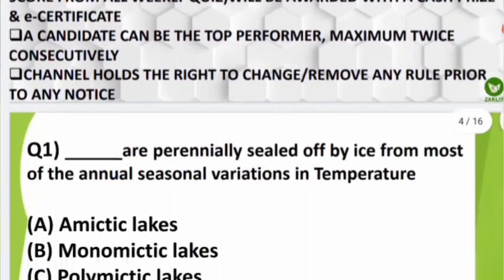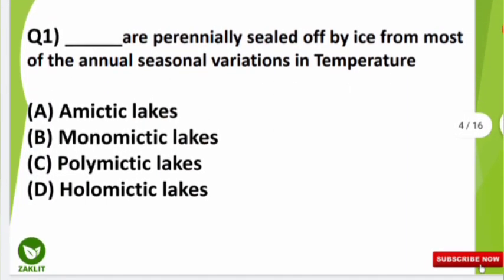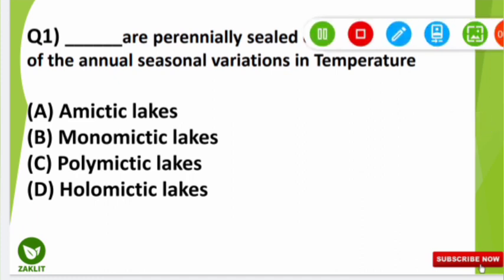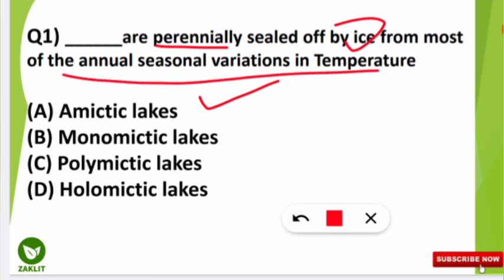The first question was: which lakes are perennially sealed off by ice from most of the annual seasonal variation in temperature? The correct option is A — amictic lakes are perennially sealed off by ice from most of the annual seasonal variation in temperature.